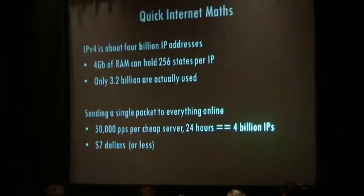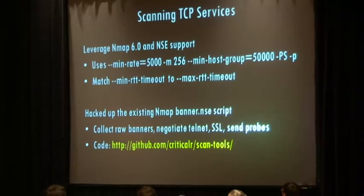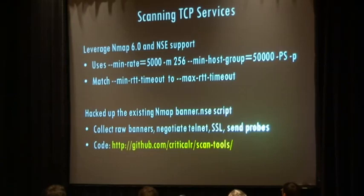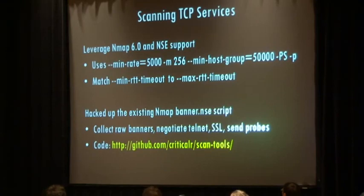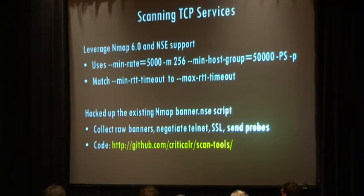Step one is scan everything. Scanning the internet is pretty cheap — about seven bucks gets you a server that can scan the entire internet in 24 hours for a given UDP port. For TCP it takes a bit longer, maybe five to ten times as long. Nmap works great — you can do bulk SYN scanning and tie into the NSE engine to scrape data from open services in one big step. Nmap can do about 50,000 packets per second per core if you tune it properly. You can cover a /16 in about a minute and a half.